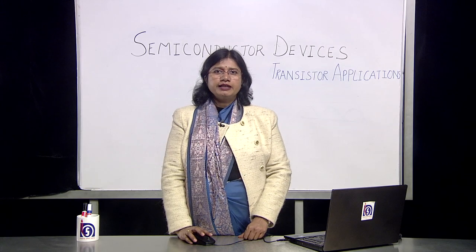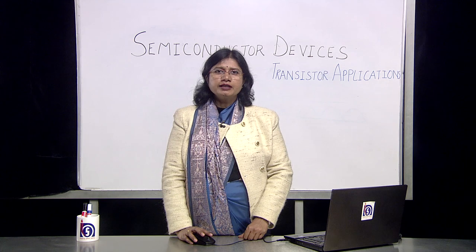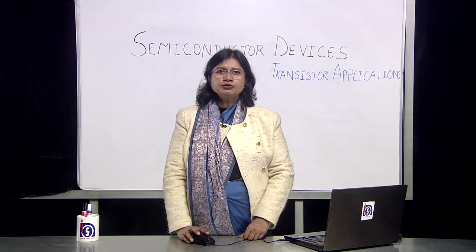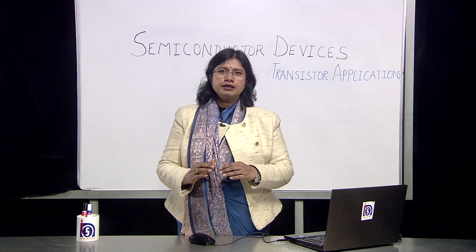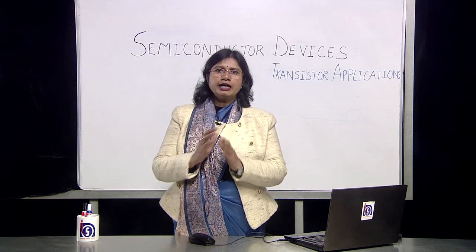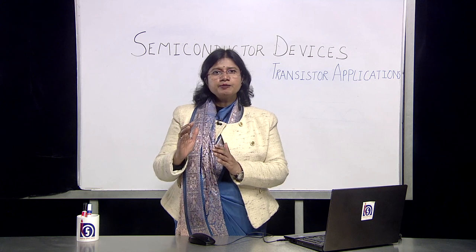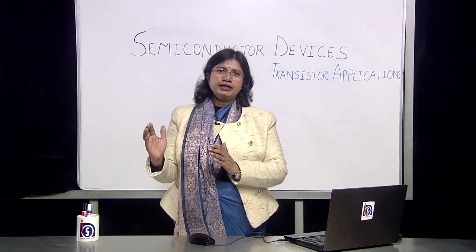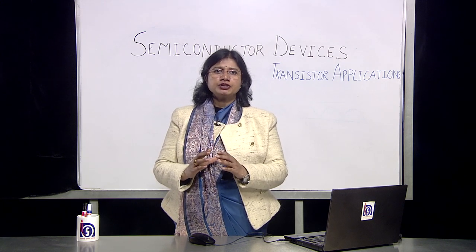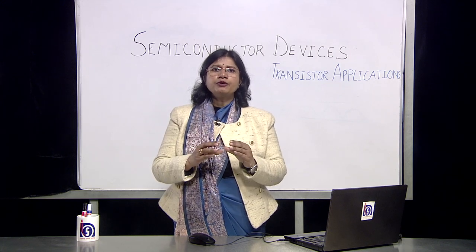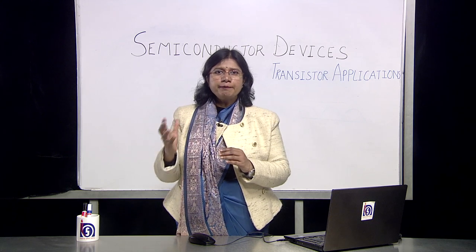Thus the input signal is amplified when measured across the output voltage RL. In this particular case, we have used an NPN transistor in the common emitter mode. The collector is reverse biased and through the load resistance RL, by connecting to the battery, we are supplying a base current IB so that the collector current also starts flowing. There's a small amount of current IB flowing across the circuit and corresponding to this we get a large amount of collector current IC. This is an intrinsic property of the common emitter configuration — for a small amount of current in microamperes, we get a corresponding output current in milliamperes.